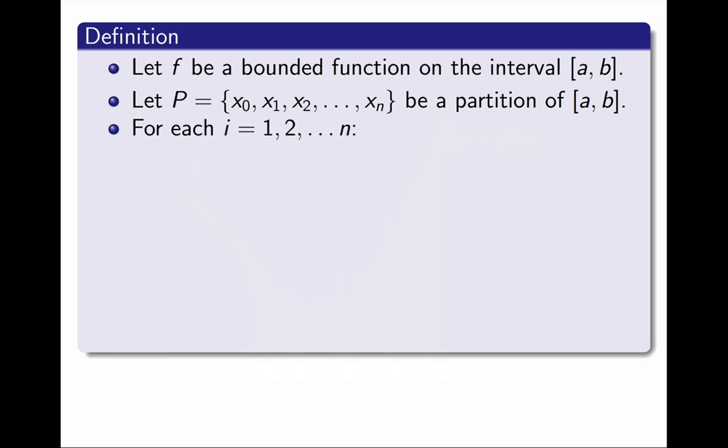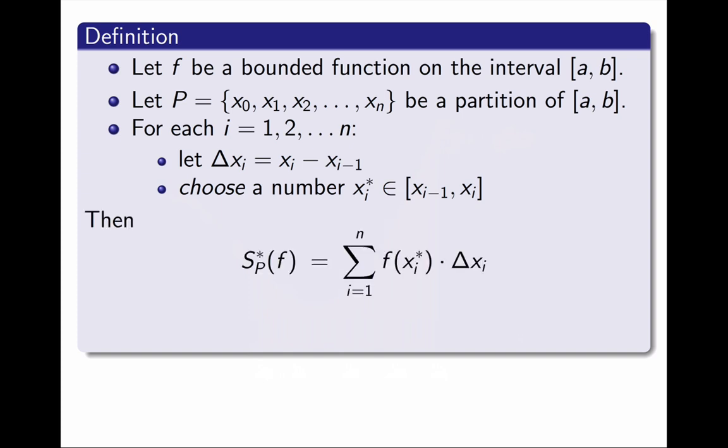For each i, I define Δxᵢ to be the length of the i-th subinterval. And I choose a number xᵢ* on the i-th subinterval. This means that xᵢ* is between xᵢ and xᵢ₋₁. Then, the sum I wrote on the previous picture is what we call a Riemann sum for f and P.